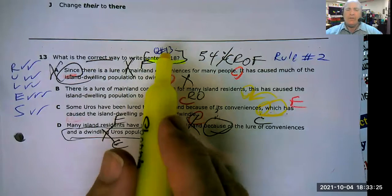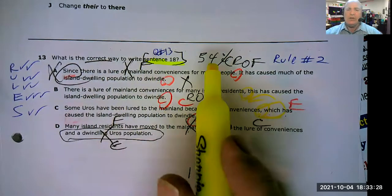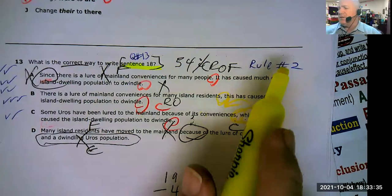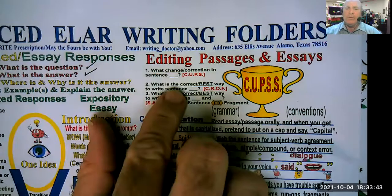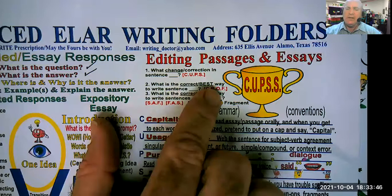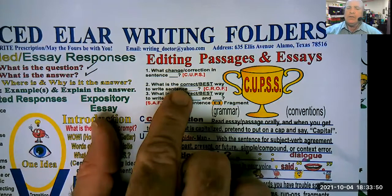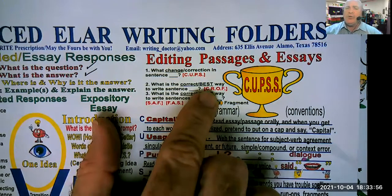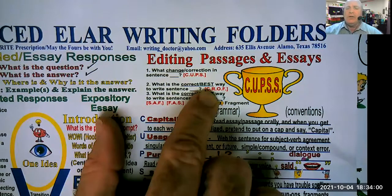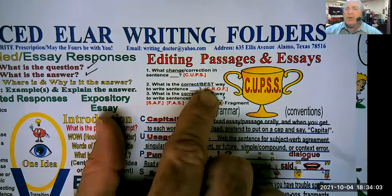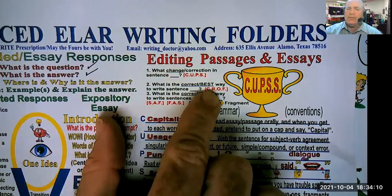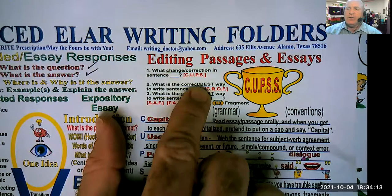And it only got 54%, just like the other one we're going to look at that says what change. So if you look at rule number two on the writing folder that lots of you have now, you're going to see it says, what is the correct or best way to write sentence, since it's singular, and it has correct, this is either a, this is a CROFT, but what I call now because about two or three times out of 100, there's not necessarily a run on or a fragment, but there's a comma or a conjunction problem in the sentence.